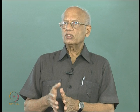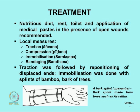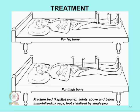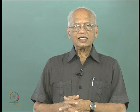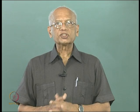A bark splint is shown in the figure — barks of trees specially chosen, prepared, and cut to size — used to immobilize the limb. If there is a fracture of the thigh, the patient cannot walk, so rest on a rigid bed called Kapata Shayana was required — a special fracture bed. The principle of treatment is to immobilize the joint above and below the fracture. For a fracture of the middle of the leg, the ankle and knee are immobilized using pegs, and a peg at the foot keeps the foot at right angles. For the thigh bone, the hip and knee are immobilized. This principle was recognized: joints above and below must be immobilized.